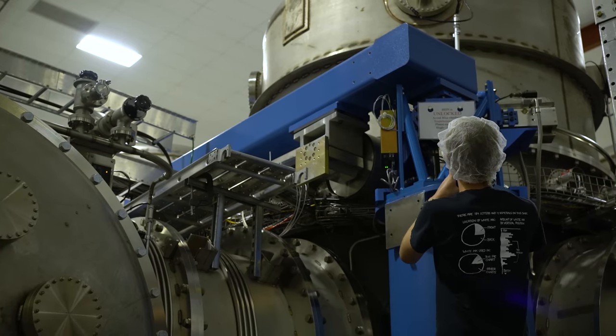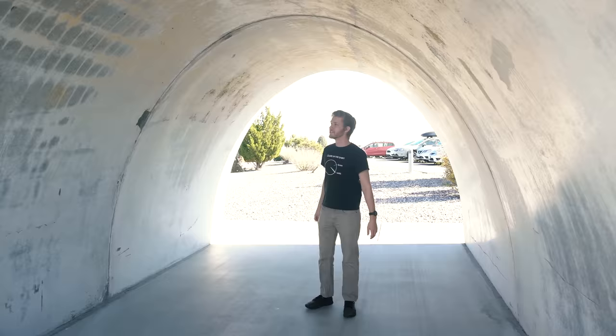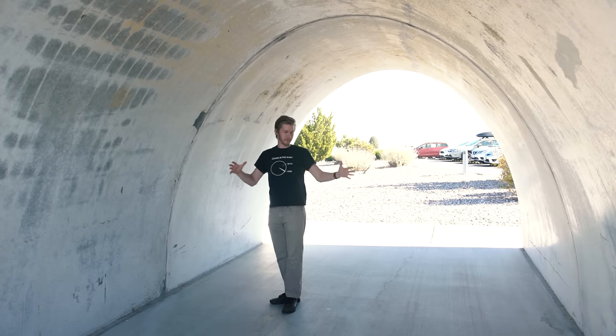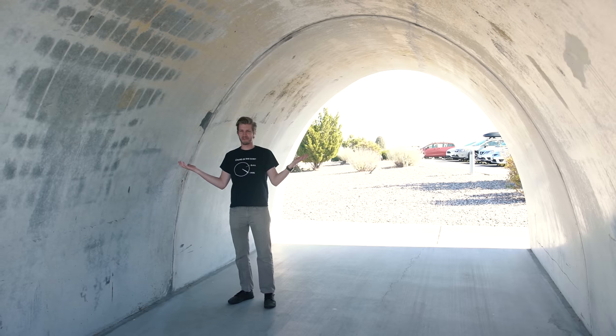Meaning that the 4 kilometer tubes, or arms, have to be under an ultra-high vacuum. This is the concrete that goes around the arm. It doesn't actually help with the laser tube, but it's just to protect it from cars, animals, stray bullets, or whatever.